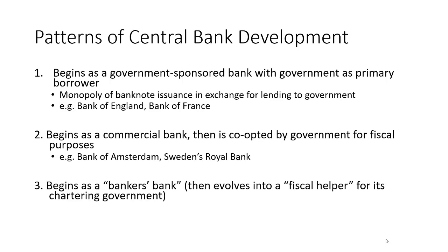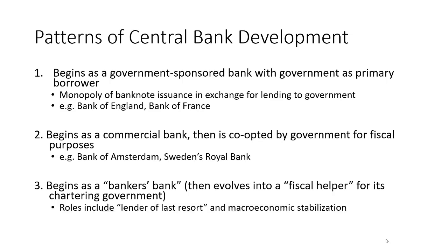Then finally, and this is a bit more modern, we have the banker's bank model — the lender of last resort — where the banking system asks for a central bank, or the government creates one under the guise of helping the banking system. That system can then evolve into the fiscal helper role of lending money to the government, buying government bonds, and monetizing government debt. This is seen most prevalently with the Federal Reserve.